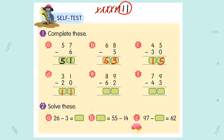For E: 89 minus 62. 9 minus 2 equals 7. 8 minus 6 equals 2. So your answer is 27.